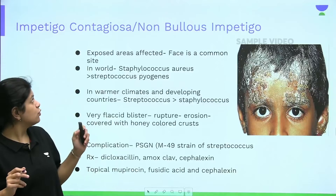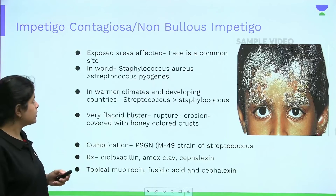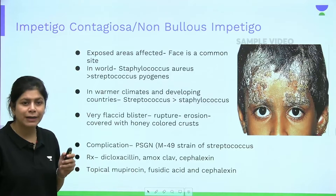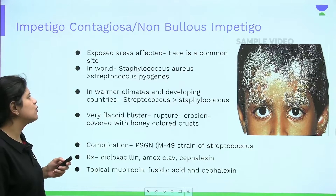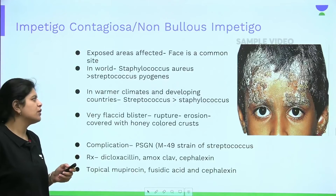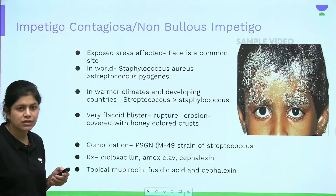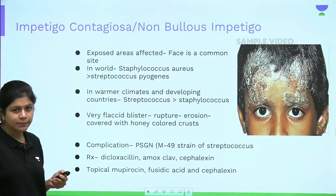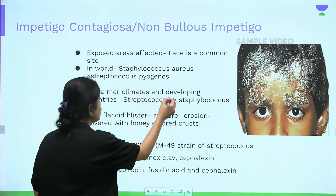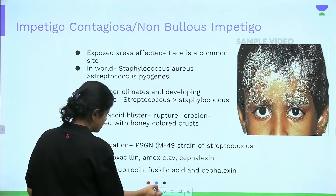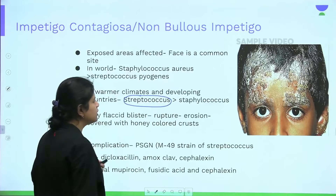Non-bullous impetigo, or impetigo contagiosa, is the most common bacterial infection in children. Exposed areas like the face are commonly affected. Worldwide, Staphylococcus aureus is more responsible than Streptococcus pyogenes, but in warmer climates like India and developing countries, streptococcal infection is the more common cause.